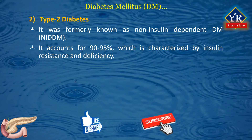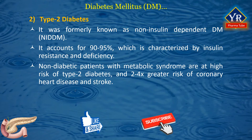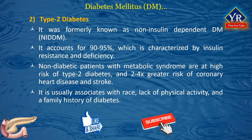Insulin resistance is associated with a number of physiological factors such as hyperinsulinemia, hypertension, dyslipidemia, hypercoagulation, pro-inflammatory state, and abdominal obesity — more often referred to as the metabolic syndrome. Non-diabetic patients with metabolic syndrome are at high risk for the development of type 2 diabetes and about 2 to 4 times greater risk of developing coronary heart disease and stroke. In addition, type 2 diabetes is usually associated with race, lack of physical activity, and a family history of the disease.